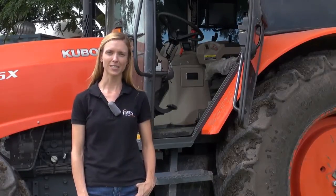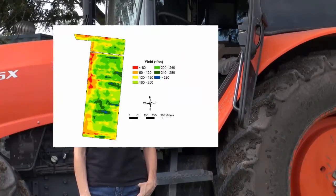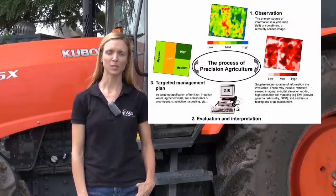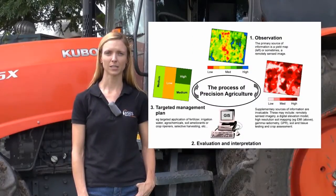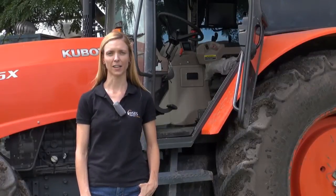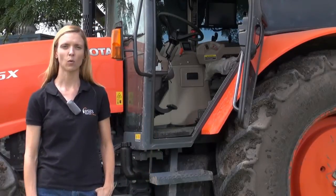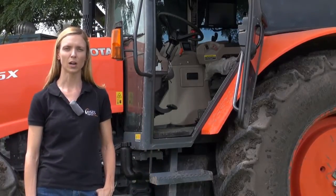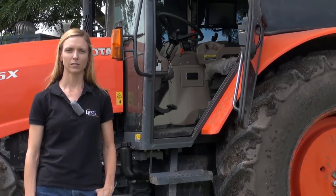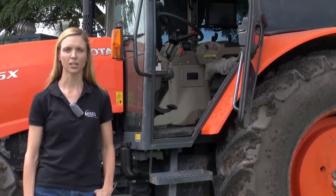The take-home message is that precision agriculture allows you to identify variability and to use this as a basis for making more informed decisions about your management and about how to use your on-farm resources most effectively. In future videos, we'll discuss in more detail what information you need to start identifying variability on your farm, and we'll look at some of the tools and technologies that are available for use in sugar cane production.